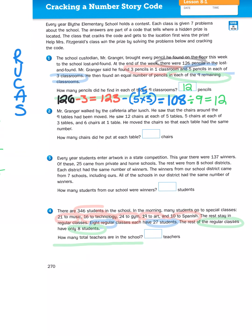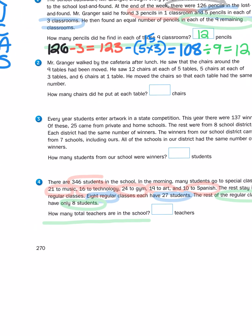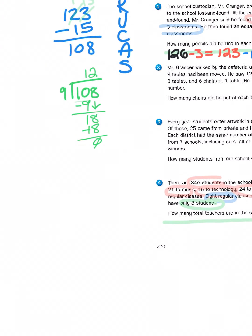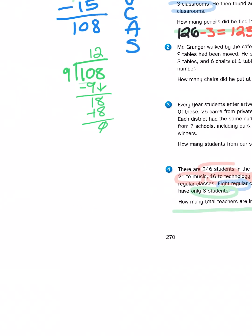I circled different parts of information with different colors as a way to visually separate some of the steps in my problem. The first part tells us that there are different special area classes that some of the students go to in the morning. 346 students total and 21 kids go to music, 16 to technology, 24 to gym, 19 to art, and 10 to Spanish. So the first thing I need to do is reduce this number of students by these first five special area classes. I'm going to create a subtraction problem.